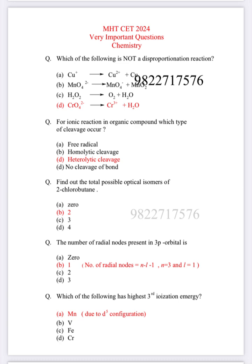Which of the following has highest third ionization enthalpy or energy? A, Manganese, because it has d5 electronic configuration which is stable. Thanks.